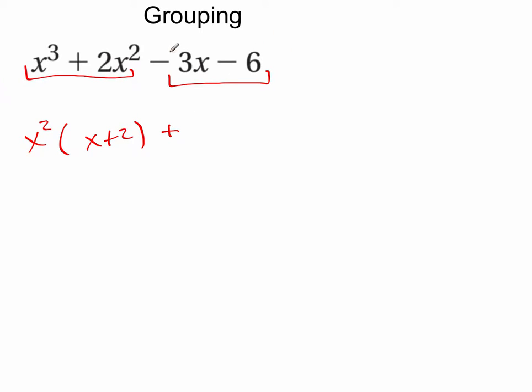Now when I group these two terms together, I see I have a common term of negative 3. When I factor negative 3 out, I'm left with x here and I'm left with plus 2 here.